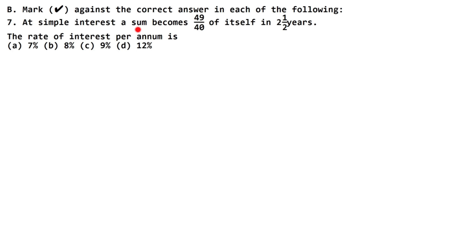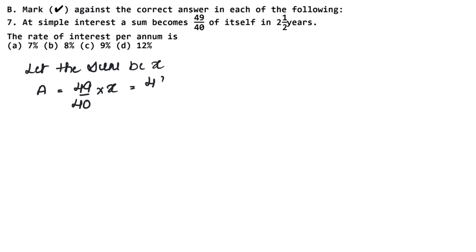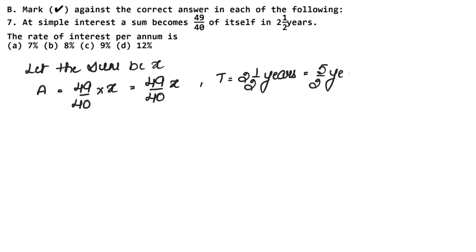We are not given the principal directly. So let the principal, or sum, be x. The amount is 49 upon 40 of x. The time is 2 whole 1 upon 2 years, which we convert to an improper fraction — that is 5 upon 2 years. The rate is not given, so we take the rate of interest per annum as R.